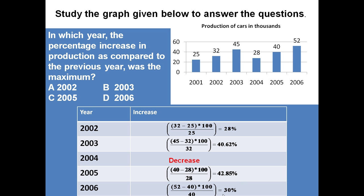So in which year this was maximum? Certainly it was 2005. Just you see here it is 2005, answer is C. In 2005 percentage increase in production as compared to the previous year was the maximum. Similarly you can answer many more questions based on the graphical information given here.